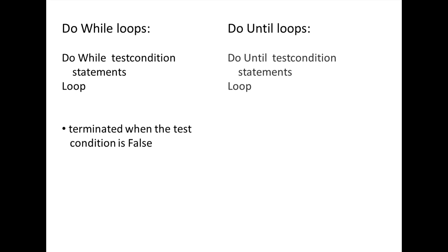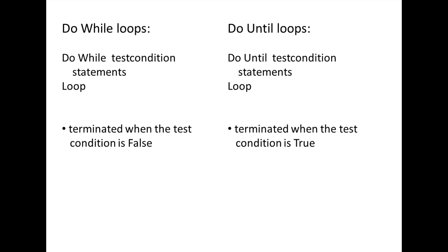DO UNTIL loops begin with DO UNTIL followed by a test condition and end with the loop statement. The statements inside the loop are executed over and over until the test condition is true. A DO UNTIL loop is terminated when the test condition is true.